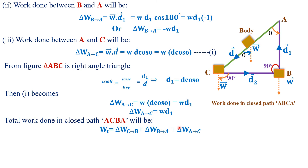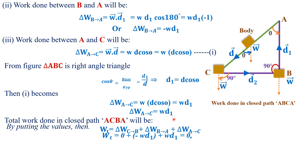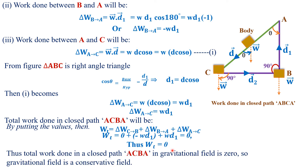Total work done in closed path A-B-C-A equals work done from C to B plus work done from B to A plus work done from A to C. Putting in the values: W(C to B) = 0, W(B to A) = −w·d1, and W(A to C) = +w·d1. Adding these, the total work done is zero. Thus, gravitational field is a conservative field, in which work done in a closed path is zero.